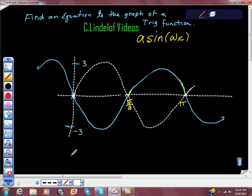It still has an amplitude of 3, but the a value is going to be negative 3. So we're going to get our f of x curve is equal to negative 3 sine of omega times x.